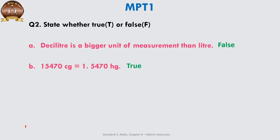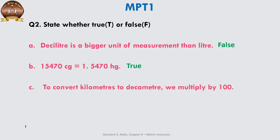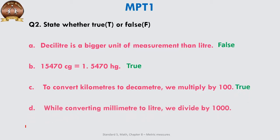When a smaller unit is converted into a bigger unit, we divide. Upon division we get the answer as 1.5470 hectograms. To convert kilometers to decameters: kilometer is a bigger unit, decameter is a smaller unit, bigger to smaller we multiply. Check the number of steps required from kilometer to decameter — so it is true. While converting millimetres to litres, millimetre is a smaller unit and litre is at the unit's place; we divide by 1000, and that's true.